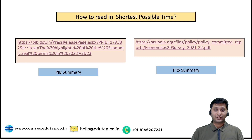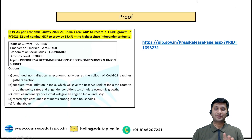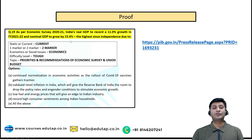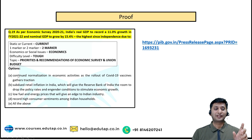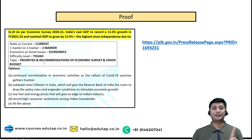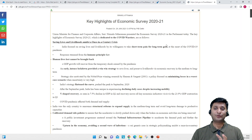Now I am showing you the proof. There is a question from the 2021 paper from the Economic Survey: as per Economic Survey 2020-21, India's real GDP is projected to record 11% growth in 2021-22 and nominal GDP to grow by 15.4%, the highest since independence — due to what reason? This question was asked, worth two marks.